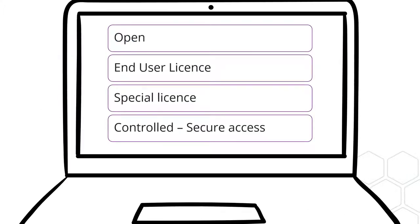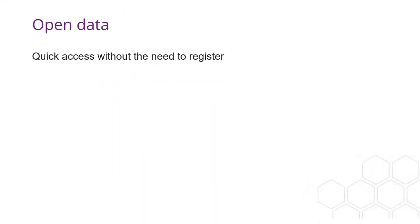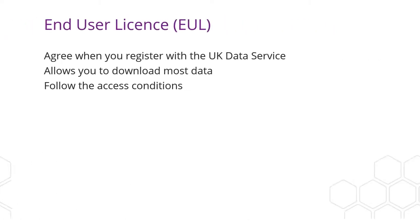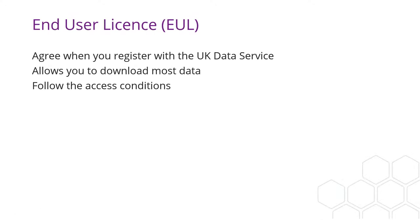There are different types of license with different access conditions. First, we have a small number of open datasets that are available without needing to register. But most of our data is classed as safeguarded and available with the End User Licence, or EUL for short. You sign the End User Licence when you register with the UK Data Service. Once you've signed it, you're able to download and access datasets in the catalogue.